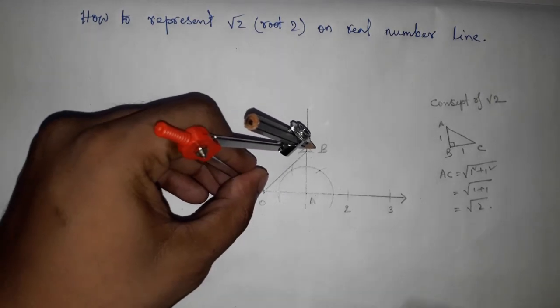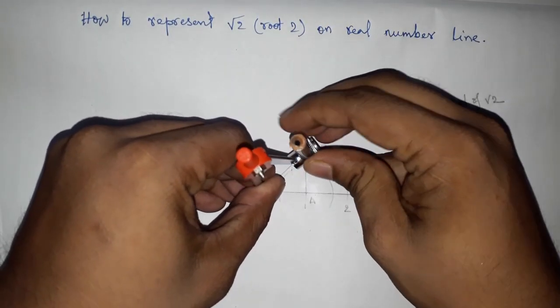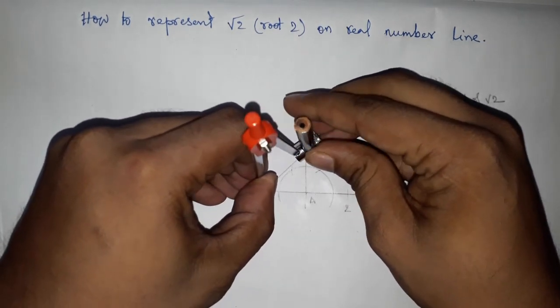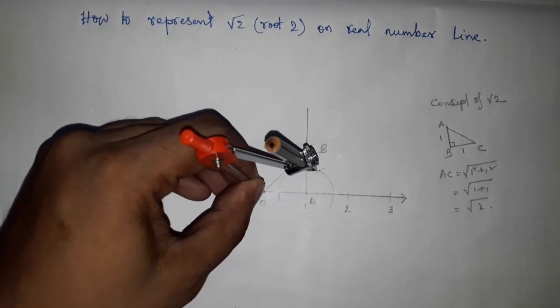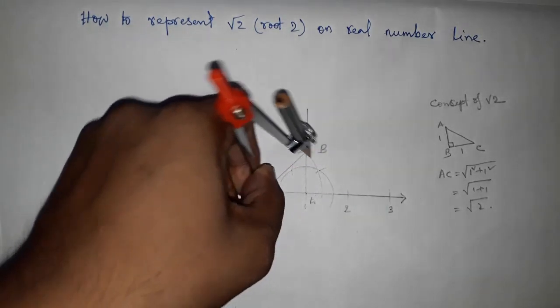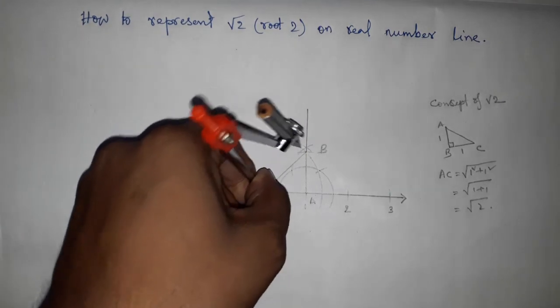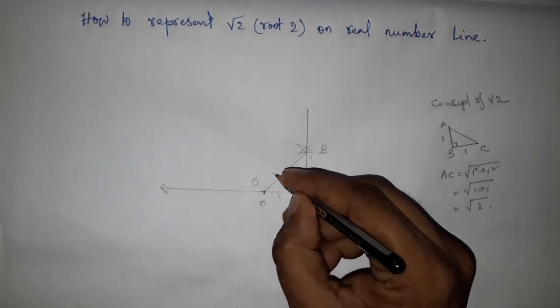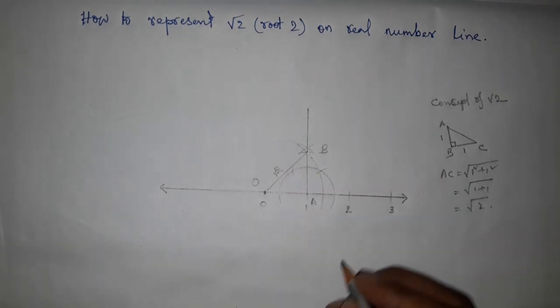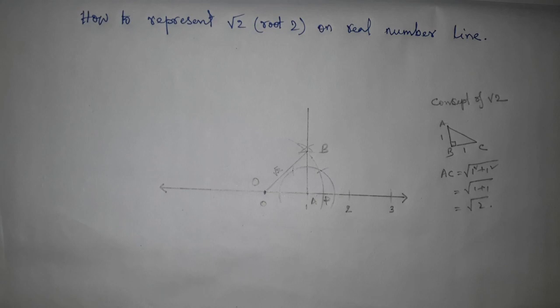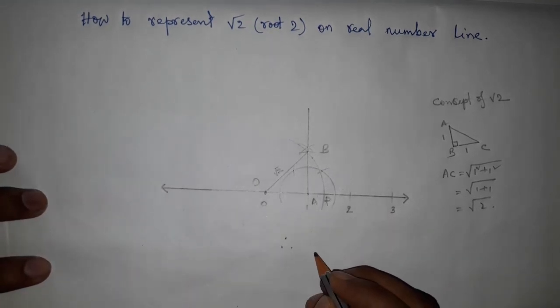Now taking OB by measuring OB and drawing an arc which cuts the line at a point. So this is √2, and the arc cuts at a point here, P. Therefore, OP equals √2.